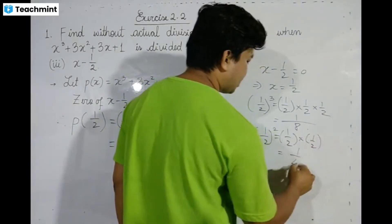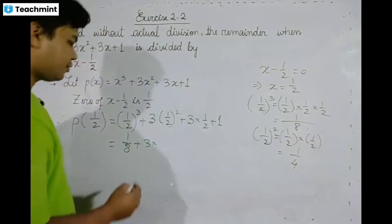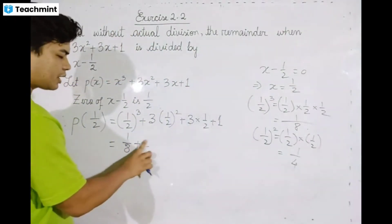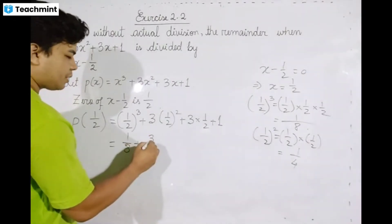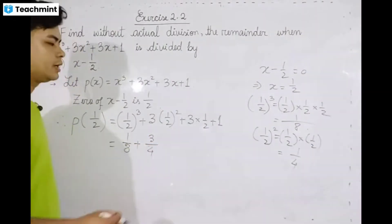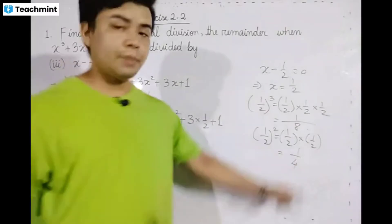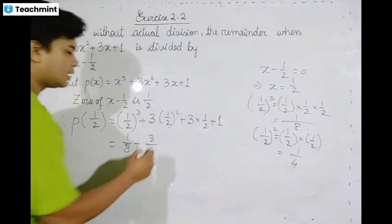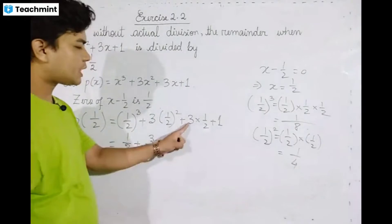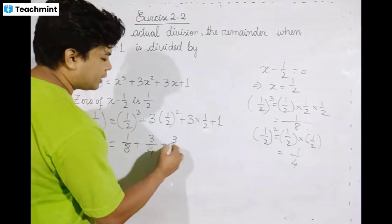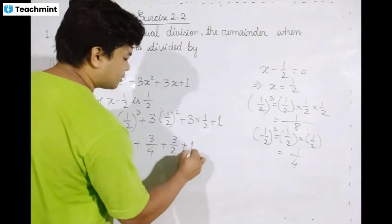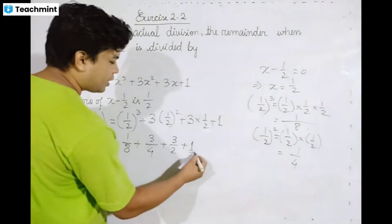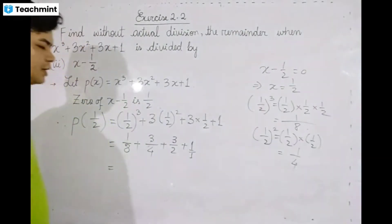Then 3 multiplied by 1 by 4, plus 3 times 1 by 2, plus 1. That gives 3 by 4 and 3 by 2 plus 1.